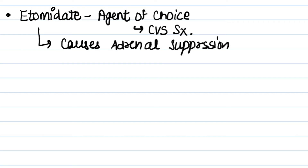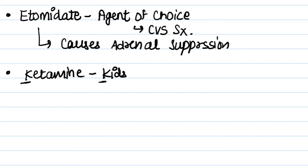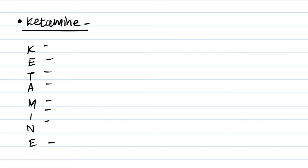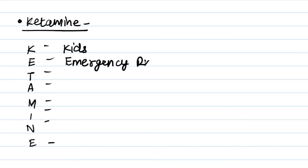Next one is ketamine. K for ketamine, K for kids — it can be used in kids. The mnemonic is KETAMINE: K for kids, E for emergency — it can be used in emergency, T for thalamocortical junction, which is its site of action.